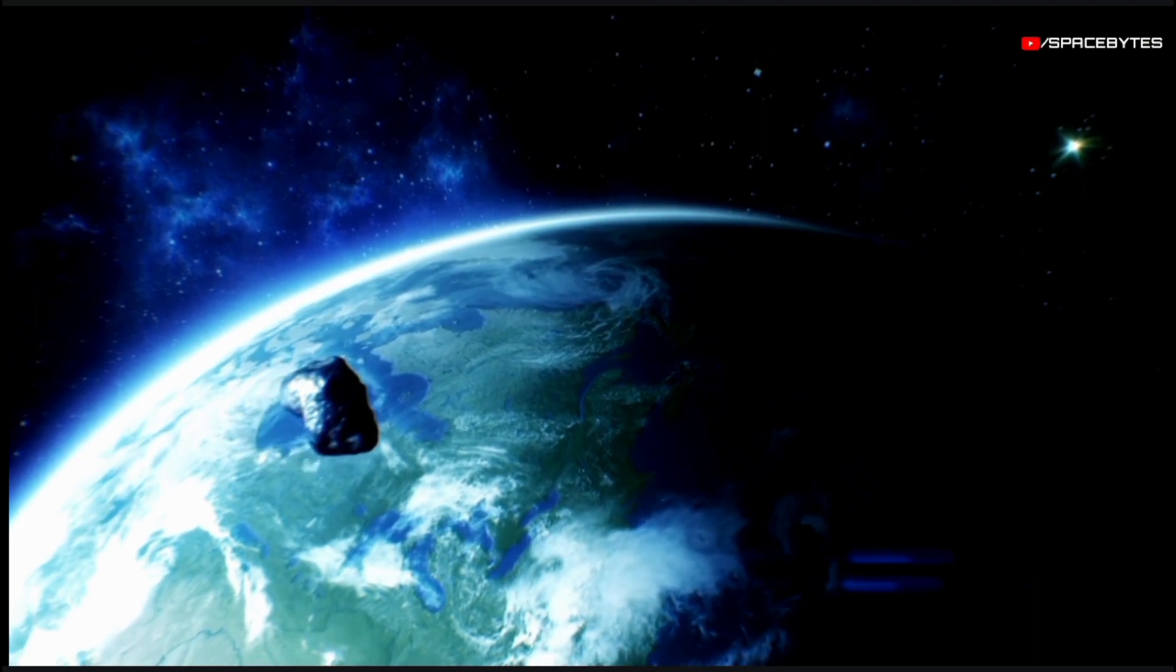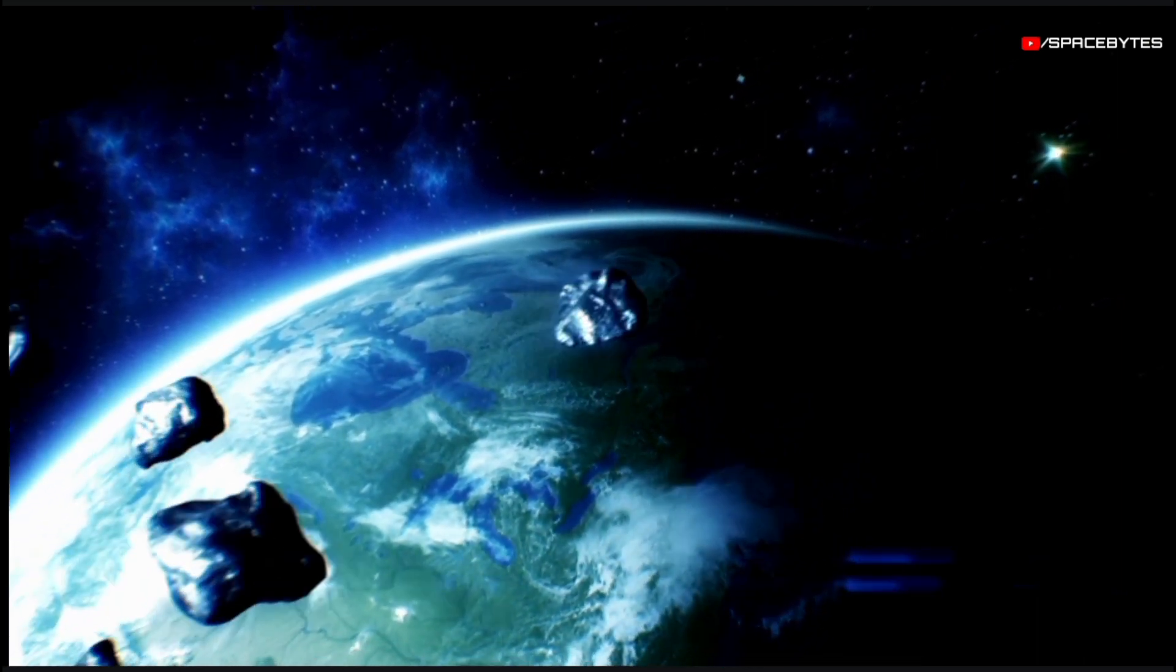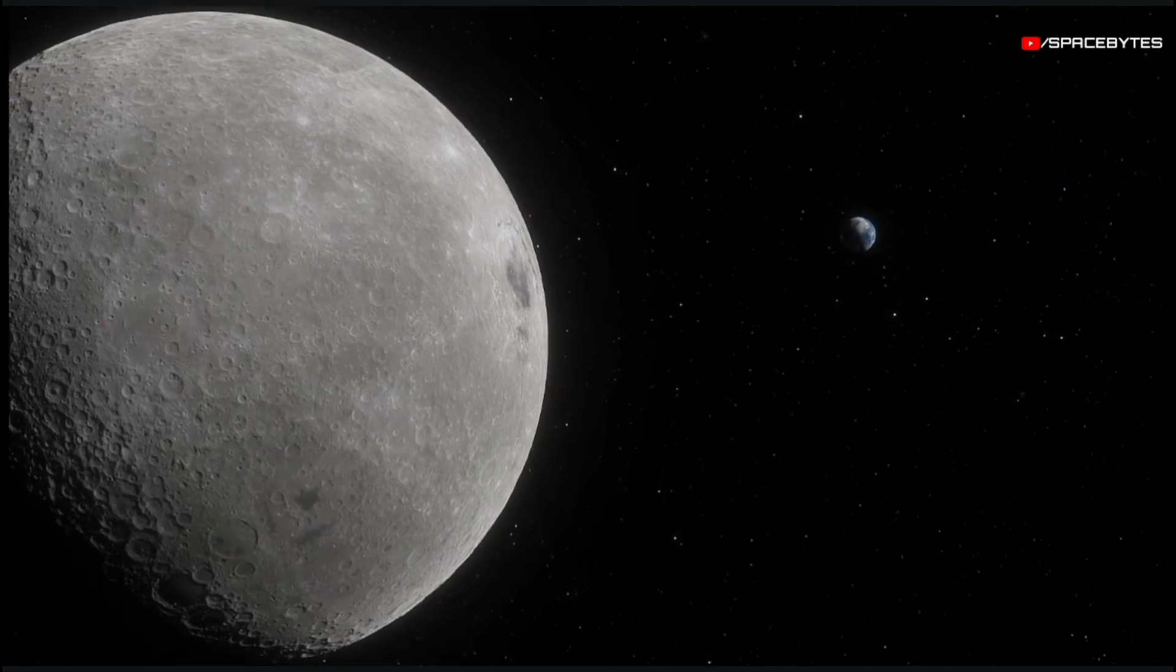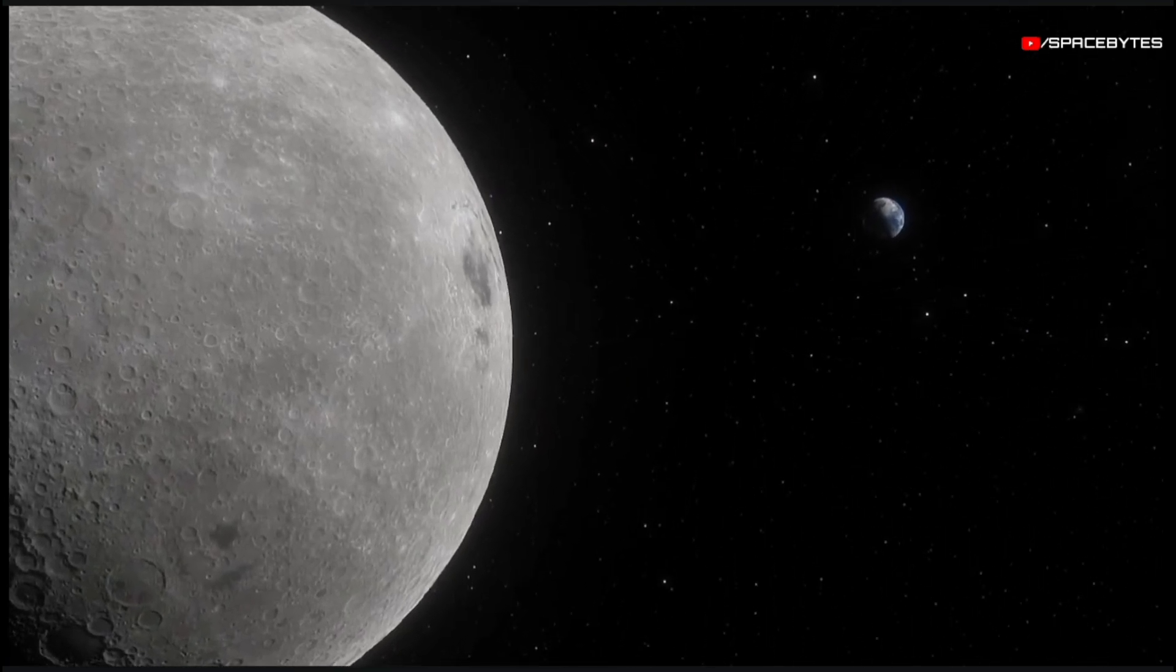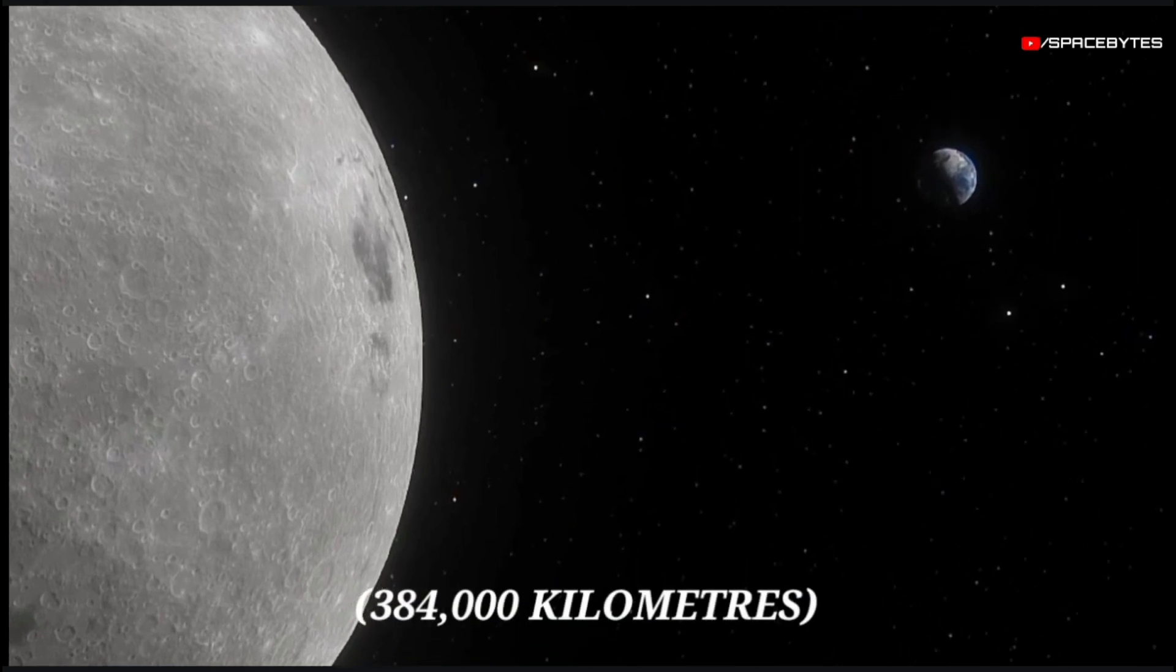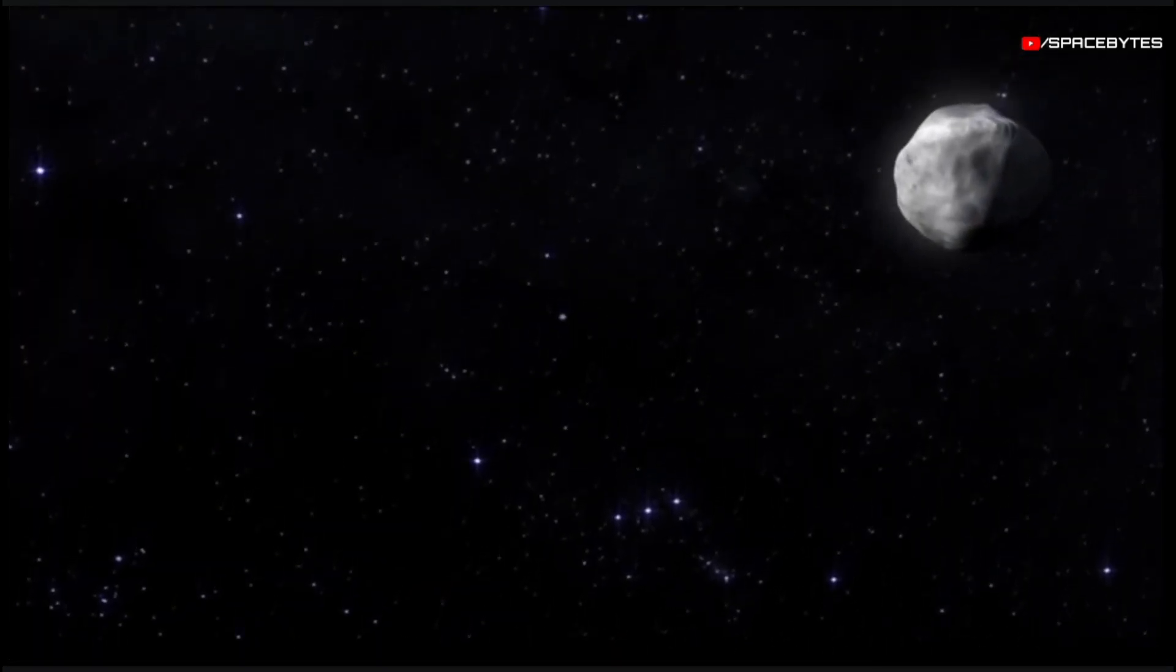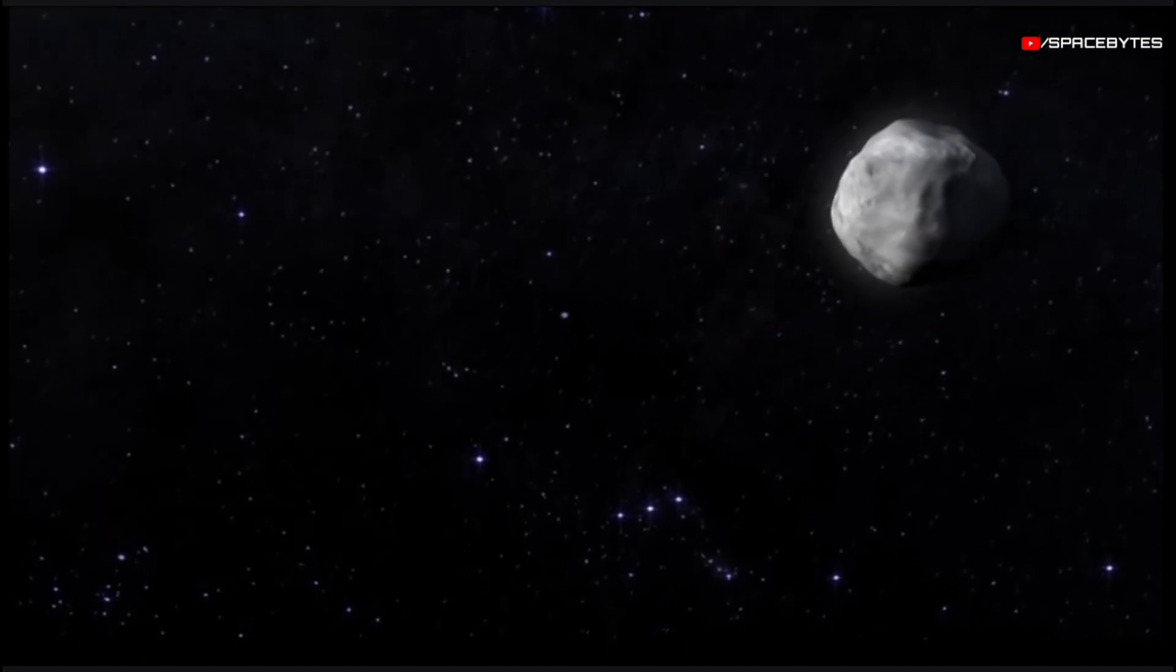This is actually very close, all things considered, and falls well under 1 million kilometers. To elaborate, the Moon orbits the Earth at a modest distance of 384,000 kilometers on average, still closer than asteroid 2015 RN35.